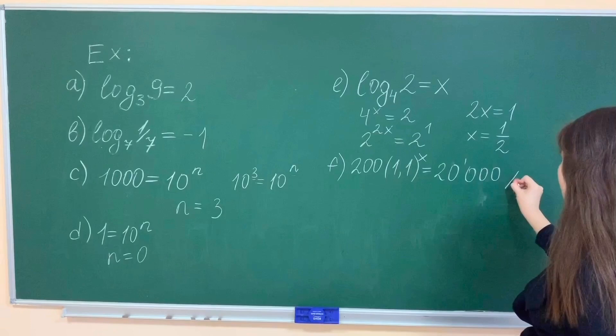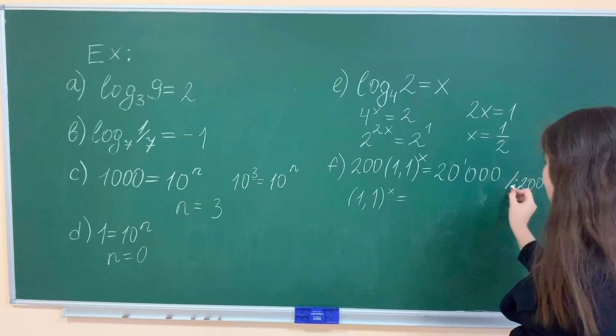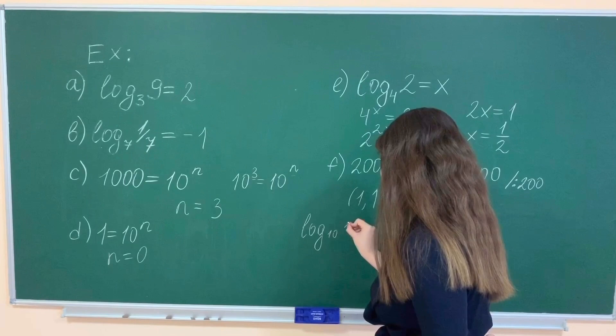Part f: Divide both sides by 200, then we substitute the logarithms.